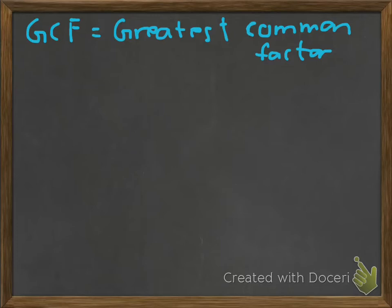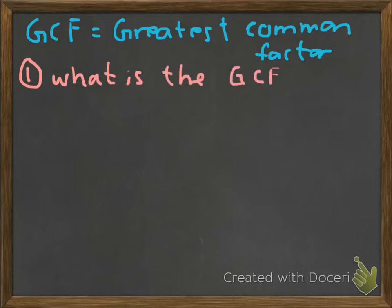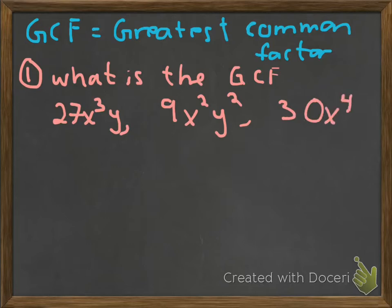So, let me just kind of start off with an example. We're going to talk about this actually right away. I'm going to call this example 1 for this video. What is the GCF for the following terms? So, I've got 27x cubed y, and then I have 9x squared y squared, and then 30x to the 4th. So, I've got three separate terms, and the question is all about what is the greatest common factor. So, what is easiest to think about is always to think about the numbers first.